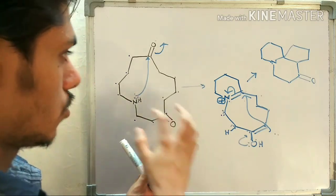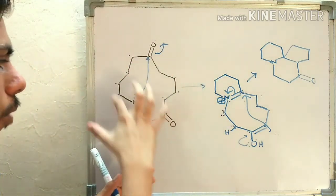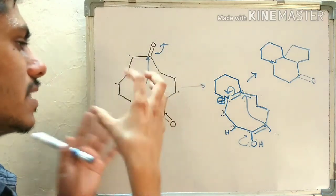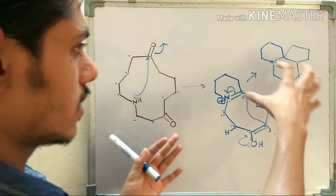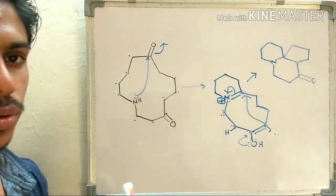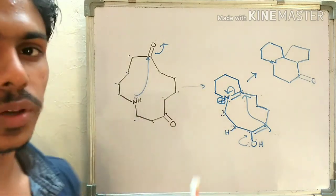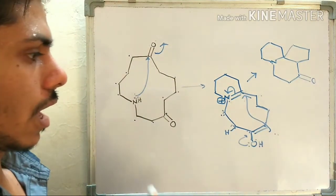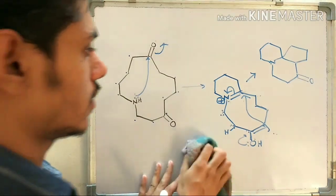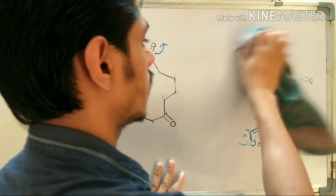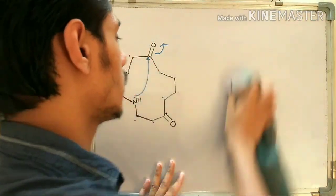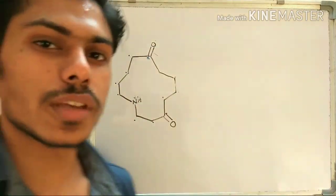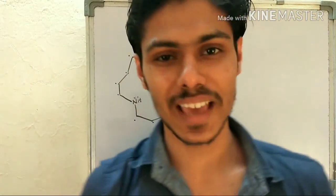So from this big macrocyclic molecule, you can get this complicated polycyclic structure. If you don't look into the structure carefully, you cannot predict what is actually happening in this reaction. I think you will like this reaction — if you liked the video, give a thumbs up and don't forget to subscribe to my channel. Thank you for watching.